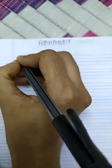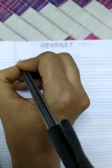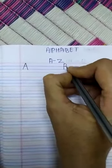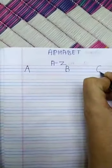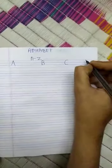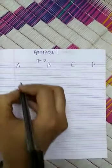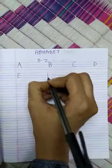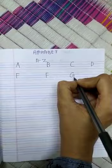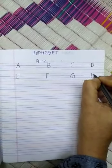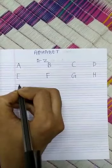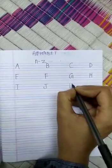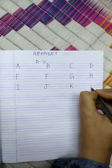See children, how I am writing like this, you have to write it down in your book. A, B, C, D, E, F, G, H, I, J, K, L.